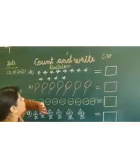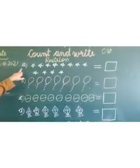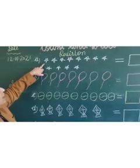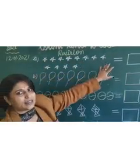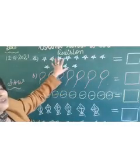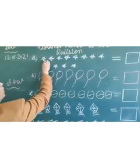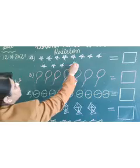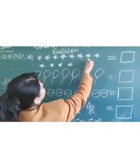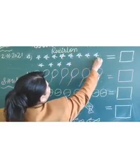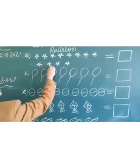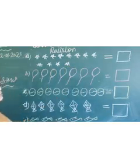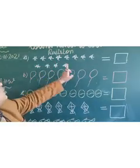Ok children, now I am going to do this. This is part A and the picture is a star. Here so many stars are there. Now I am going to count this. See, 1, 2, 3, 4, 5, 6, 7, 8, 9, 10, 11, 12. How many stars? There are 12 stars.